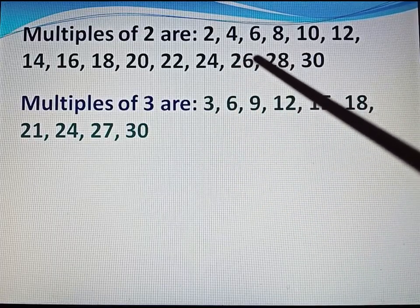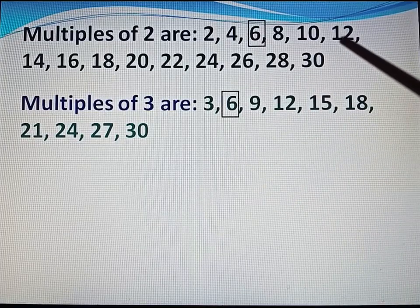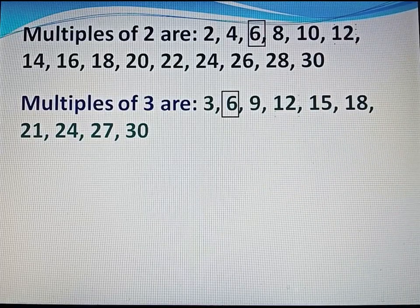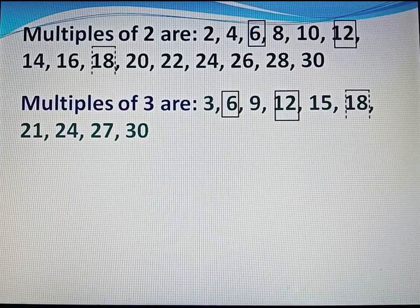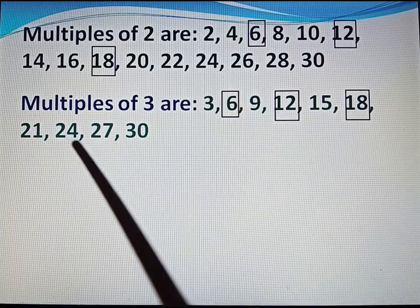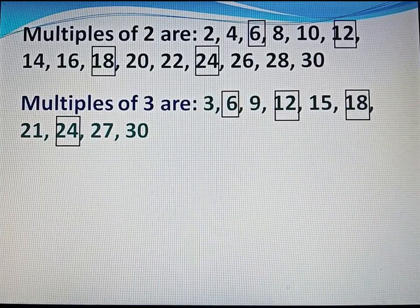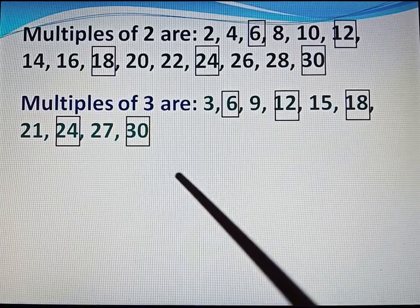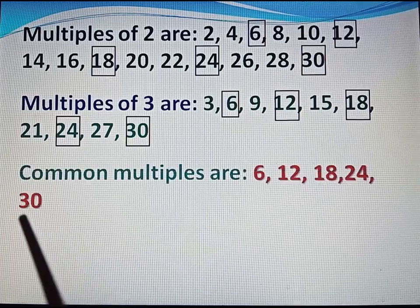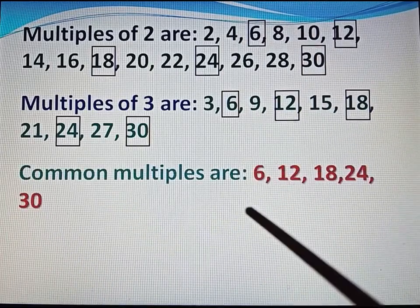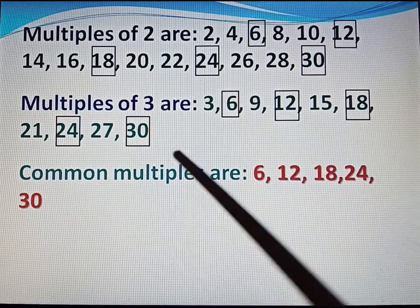Now we will calculate common multiples of 2 and 3. Common multiples are: 6 — mark 6; next common multiple 12 — mark 12; next mark 18; next 24; next 30 — mark 30. So the common multiples of 2 and 3 are 6, 12, 18, 24 and 30.